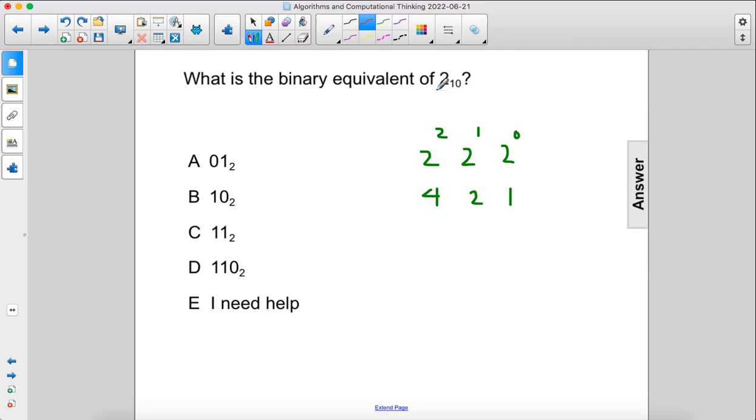The number that we're trying to convert is 2, which is less than 4, so we don't even need that column at all. So 2 is going to be, we're going to place a 1 here to represent we have 1, 2, and that's it, there's no remainder.